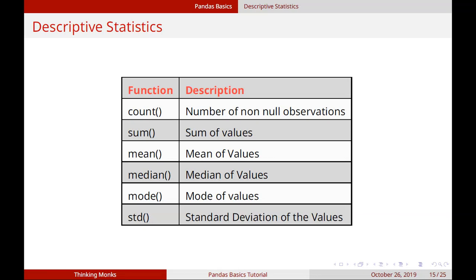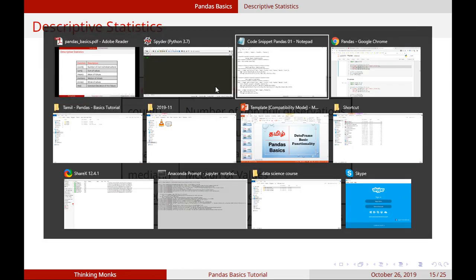Hi friends! Let's talk about descriptive statistics in Pandas. Descriptive statistics is a large statistical function — mean, median, mode. In this standard function, we need to use a column. If you just call this function, you can calculate all numerical columns. How do we use this? Let's look at the data.